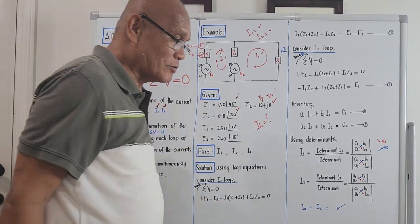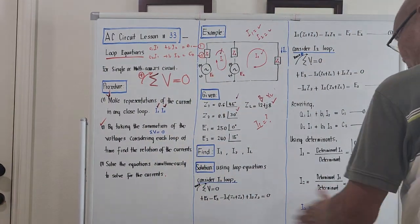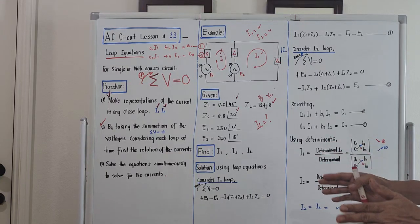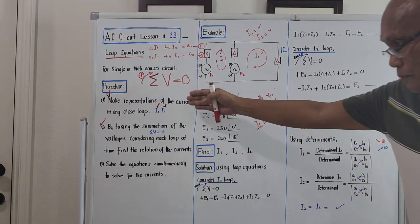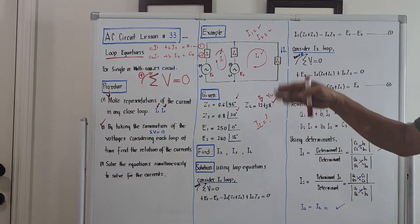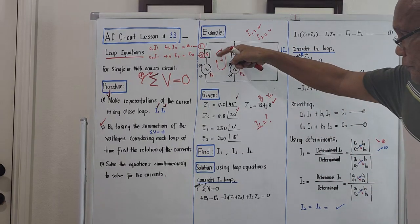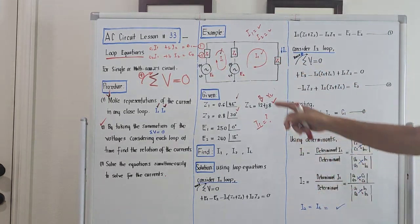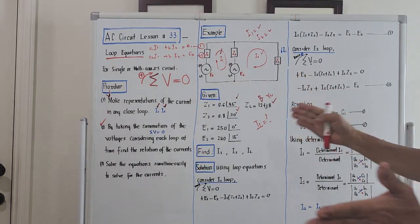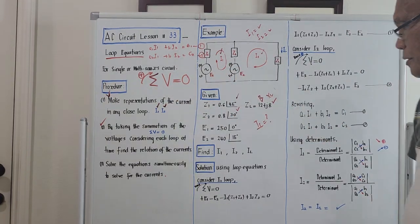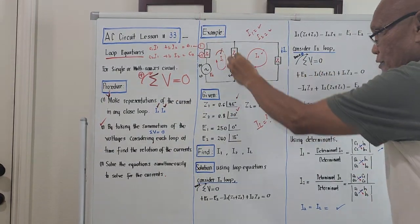We will not solve the problem completely tonight — we may continue in the next lesson — but I will bring out the solution so you can visualize the procedures. According to procedure number one, make representation for the currents: the current on the first loop is I1 and the current in the second loop is I2. Now the next step is to take the summation of voltages considering each loop.